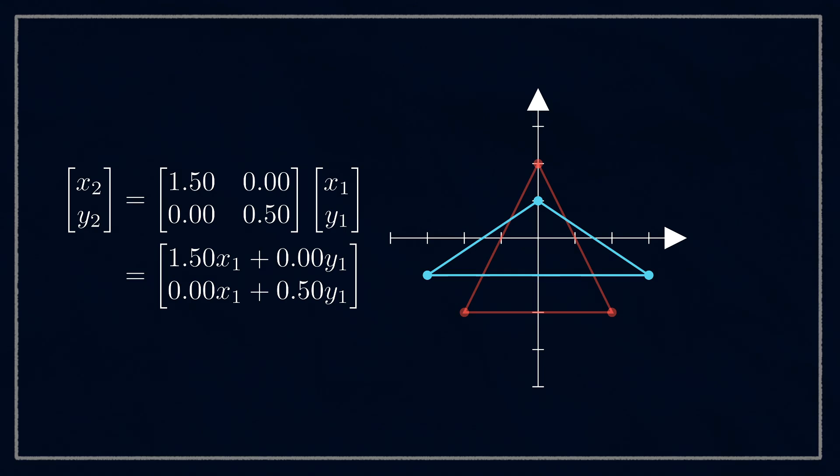And then those off diagonal elements control how much y in affects x out, and x in affects y out. To understand this, it's easiest to see it in practice. By leaving the other numbers as they started, we can adjust these one at a time, resulting in a shear or a skew transform. And with a little bit of fiddling, we can actually replicate something that resembles a rotation.